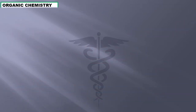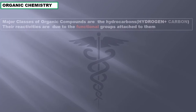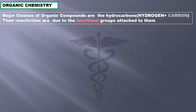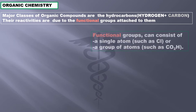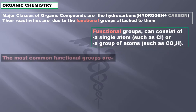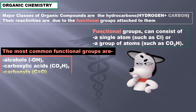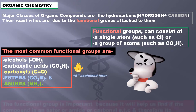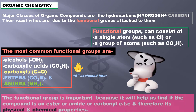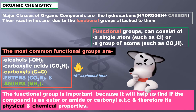Let us refresh our organic chemistry a little bit to understand the molecular structure of esters and amides. Major classes of organic compounds are the hydrocarbons — hydrogen plus carbon — and their reactivities are due to the functional groups attached to them. Functional groups can consist of a single atom such as chlorine or a group of atoms such as CO2H. The most common functional groups are alcohols (OH), carboxylic acids (CO2H), carbonyls (C=O), esters (CO2R), and amines (NH2). The functional group helps us find if the compound is an ester, amide, carbonyl, etc., and therefore determines its physical and chemical properties.